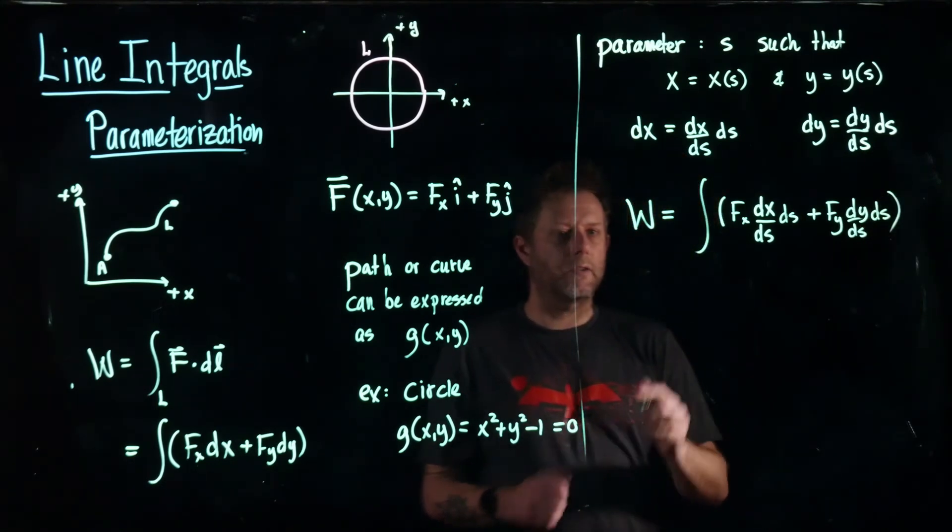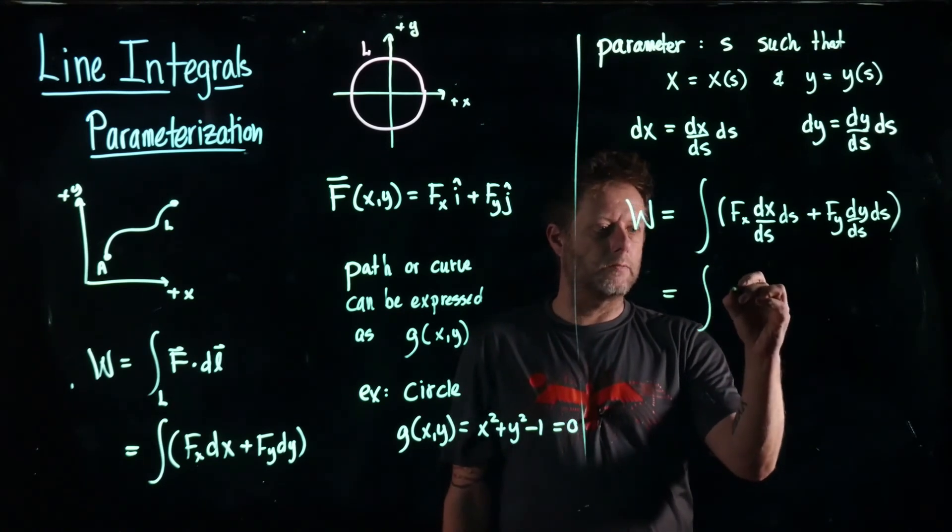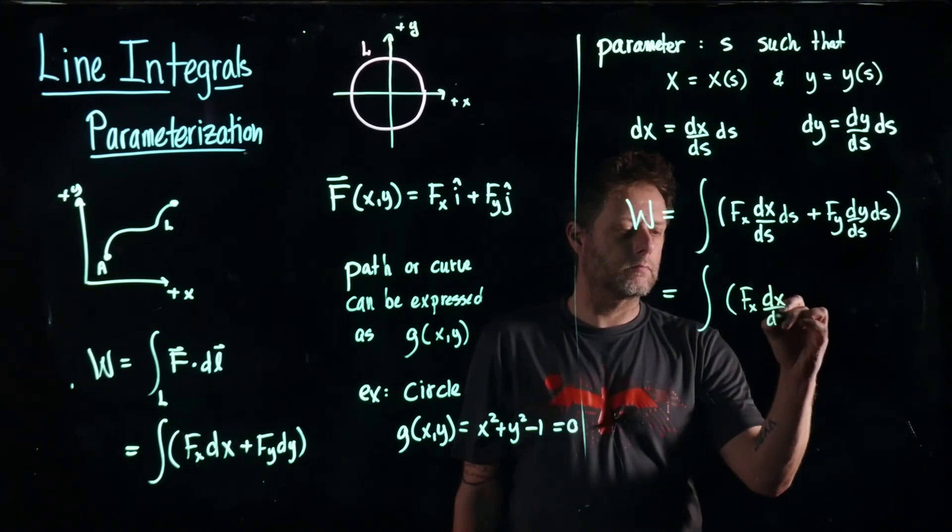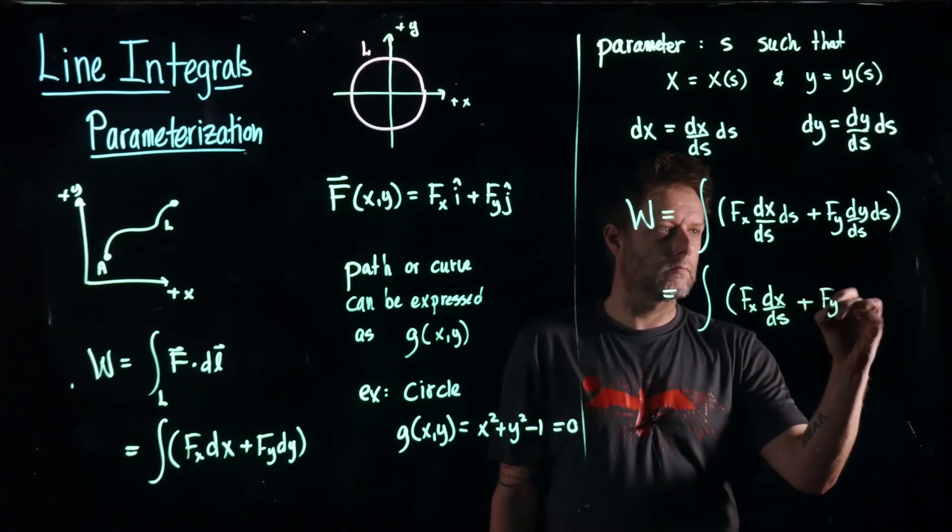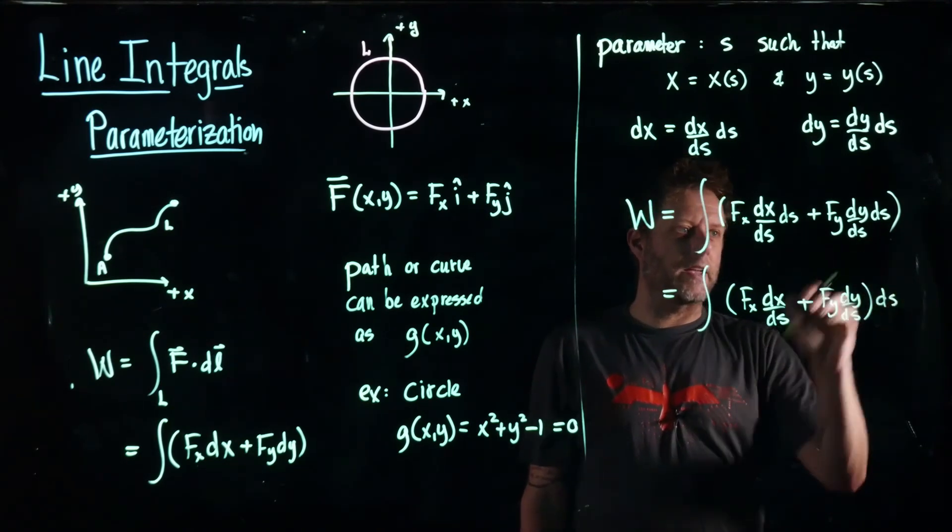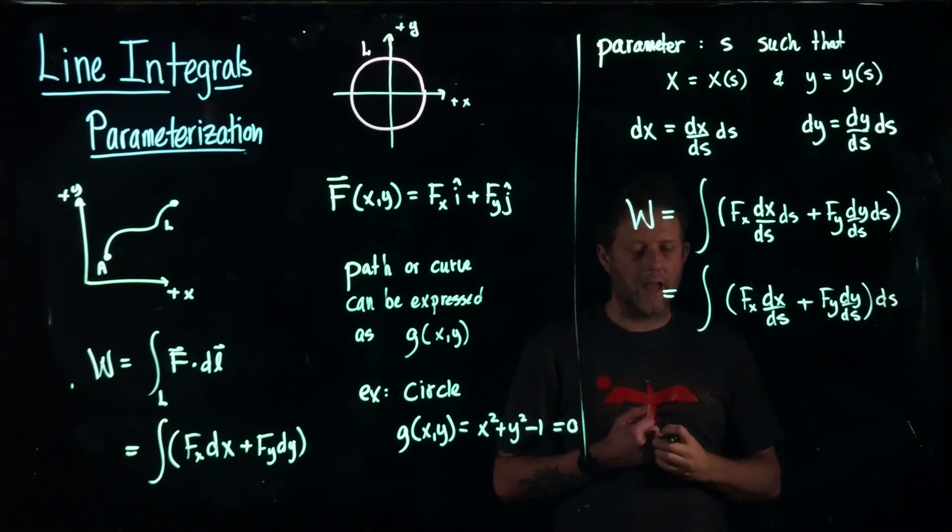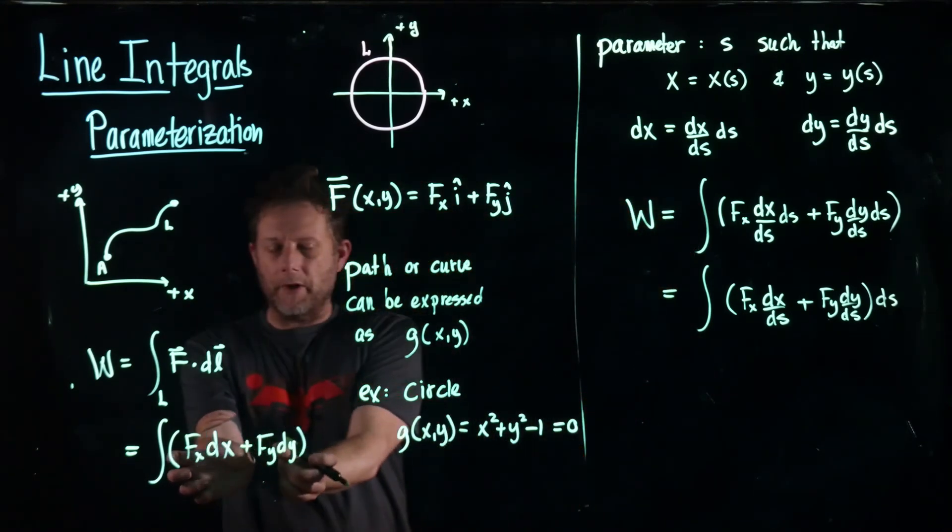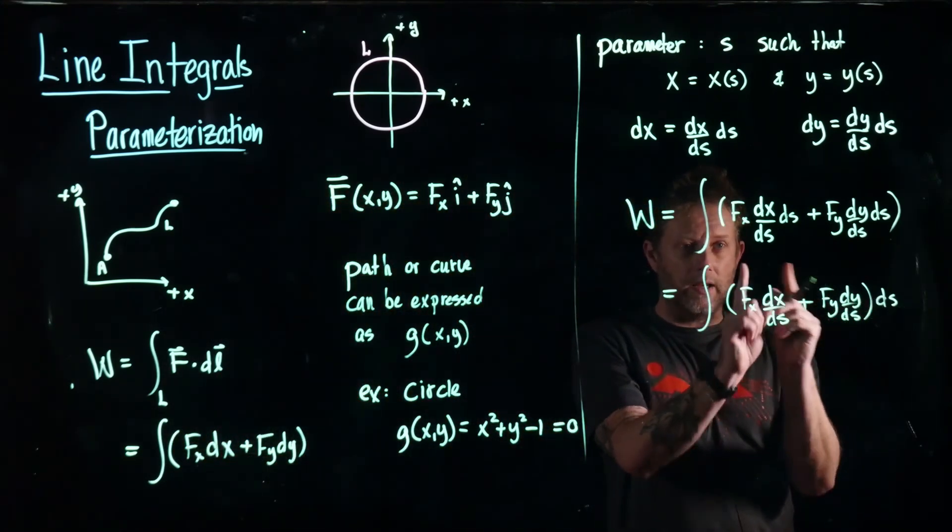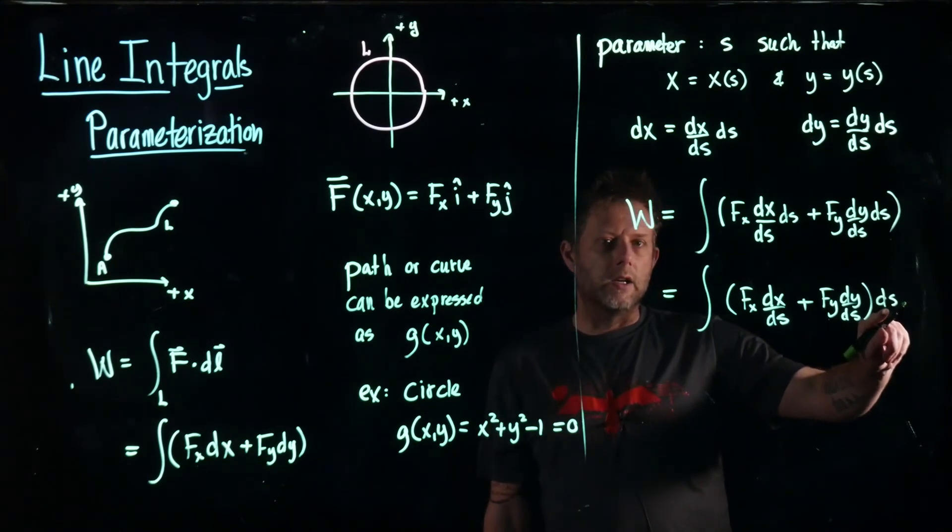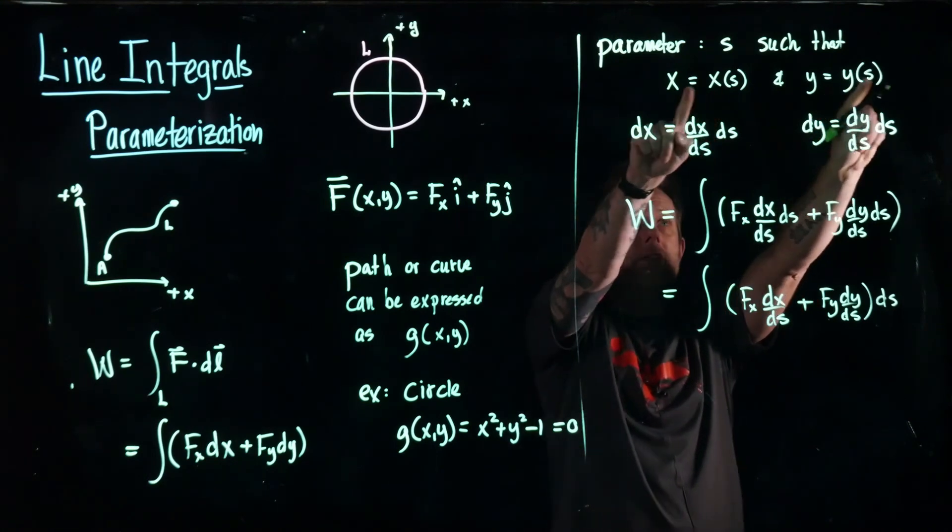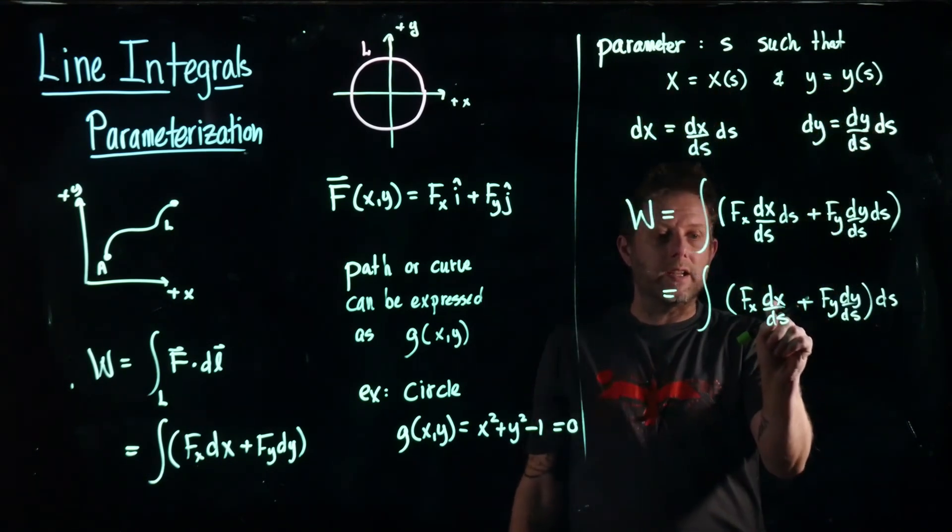Okay, so what we notice here if I write it out a little bit more clear, just taking differential ds and move outside the parentheses, is that we have taken our integral where we integrated along x and along y and we converted it into a one-dimensional integral where we just integrate with respect to this parameterization variable s. And that is provided we have this information.